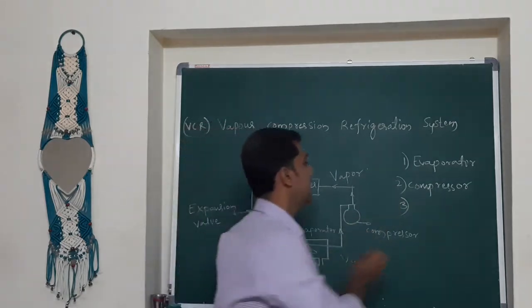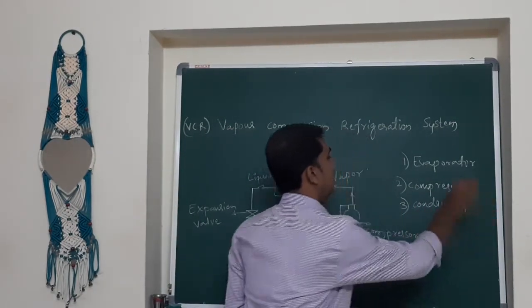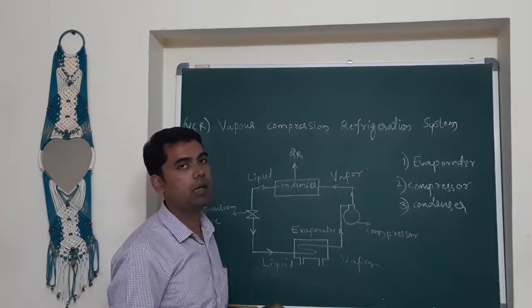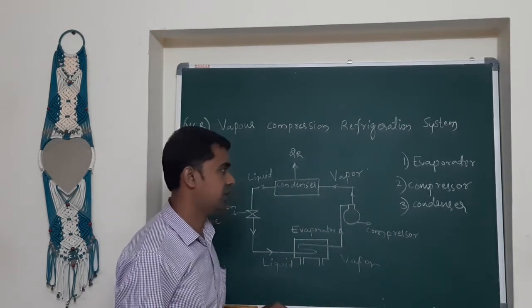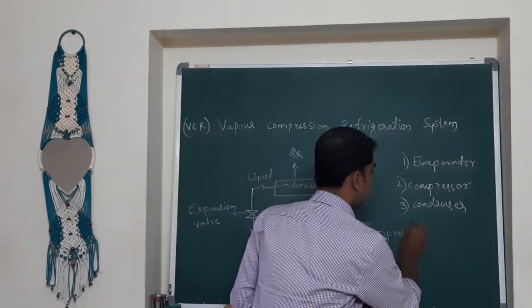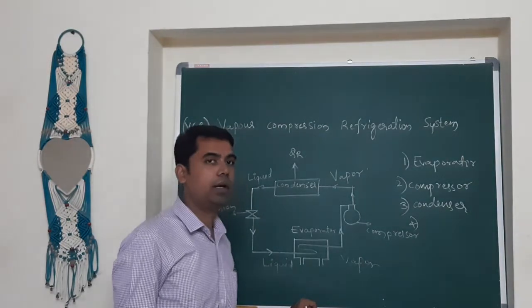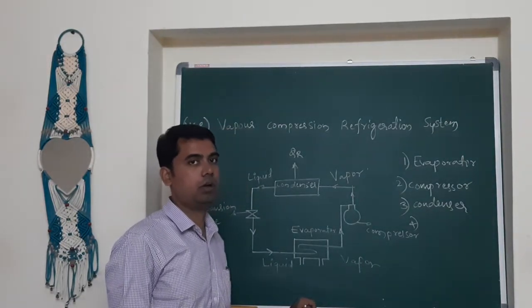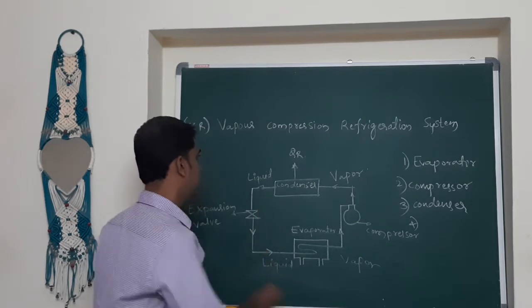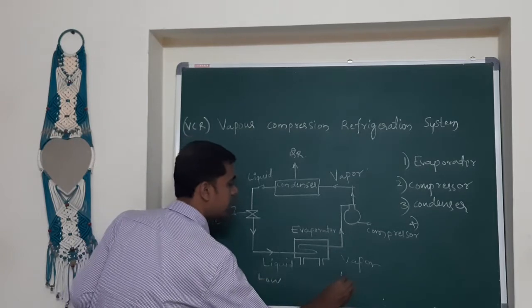The condenser is in the surrounding area, and due to condensation, latent heat of condensation is rejected in the condenser. The fourth part is the expansion valve, also sometimes called a throttling valve. It is used to reduce the pressure of the high pressure liquid to low pressure.